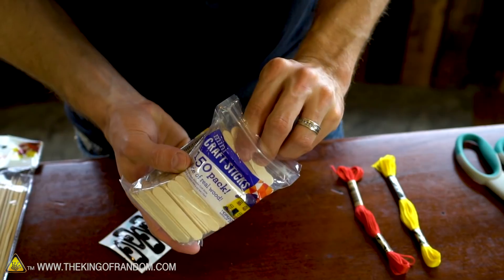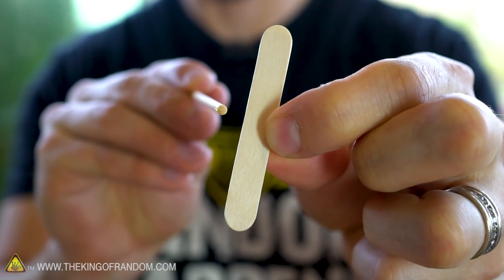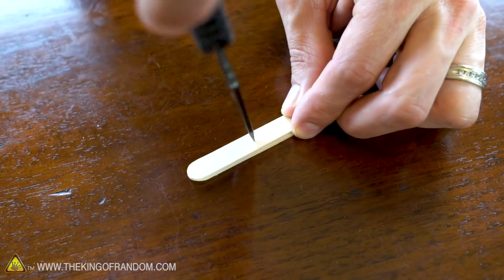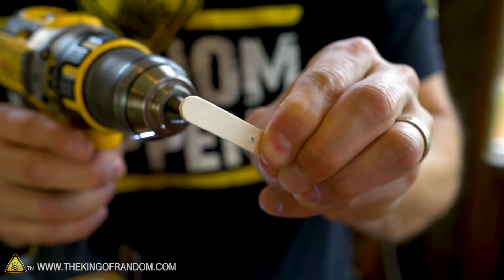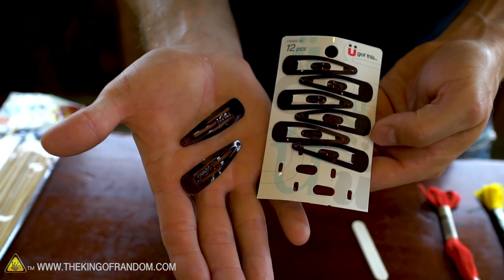Now to get started building our longbow, we're going to need to grab one of these small craft sticks and put a hole through the center just wide enough to accommodate a bamboo skewer. You can do that in a number of ways: you can use a sharp point of a knife and just spin it in circles, or you can grab something like a 9/16-inch drill bit and very quickly drill a hole right through it. Then take two of these little hair clips and give them a small modification.